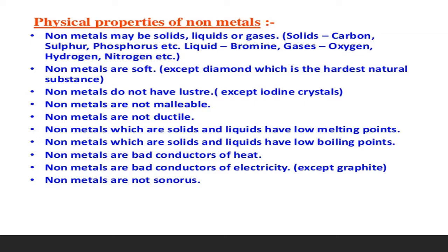The next point is that non-metals which are solids and liquids have low melting points. Similarly, they have low boiling points as well, but this is not applicable to non-metals in the gaseous state. Non-metals are also bad conductors of heat and electricity, except graphite. Graphite is a form of carbon — just as diamond is one form of carbon, graphite is another — and it is an exception because it conducts electricity. So except graphite, all other non-metals are bad conductors of electricity.